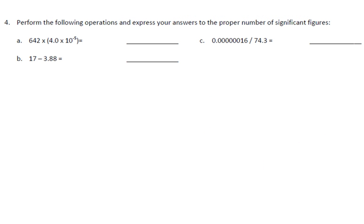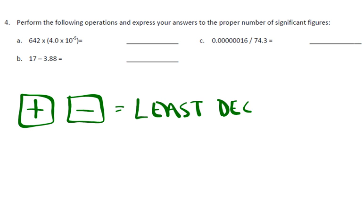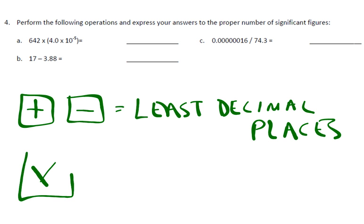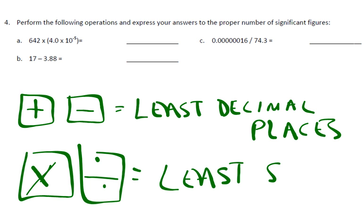Perform the following operations to express your answers in the proper number of sig figs. This is all you have to remember. Addition and subtraction, before you start, you know it's least decimal places. If it's multiplication or division, looks like this button on your calculator. I'm just kidding. I know you know what it is. It is least sig figs. So, when I go to do it, if I notice right away, I see multiplication. Before I even start, I do least sig figs. If you look right here, 642 has three significant figures. 4.0, we don't count the times 10 to the negative fifth. So, we're going to just say it's two sig figs because we know that using the Beyonce rule.